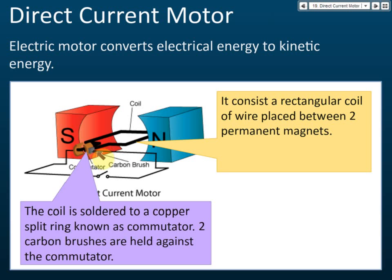This coil is soldered to a copper split ring. You can see that there's a ring here, but this ring is not connected, so it's a split ring. We call this commutator. These two pieces of copper are called a split ring commutator.